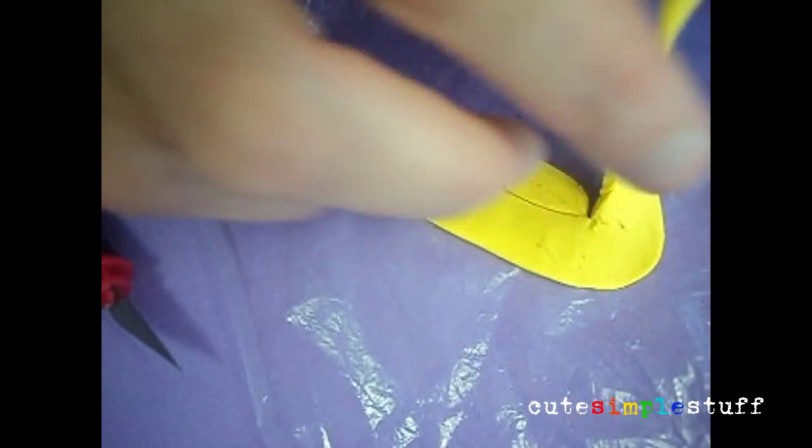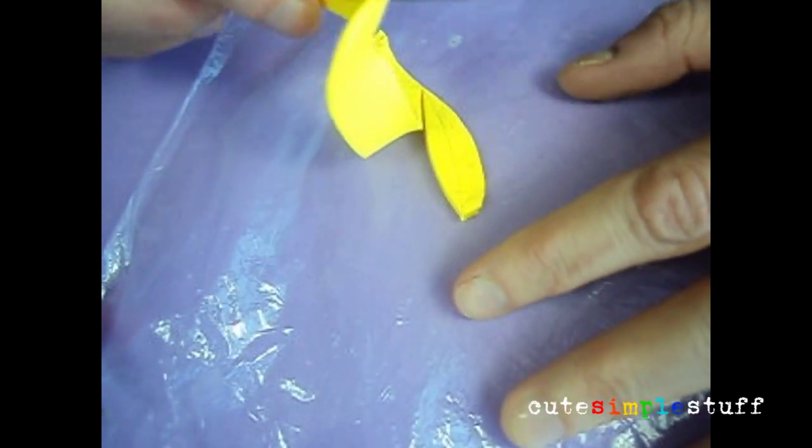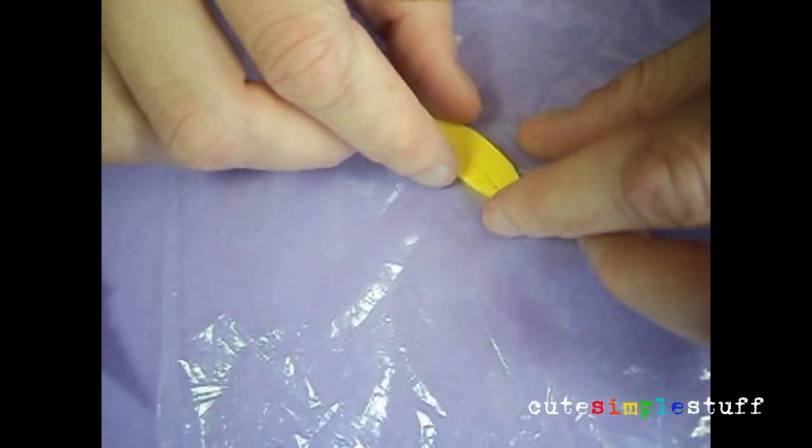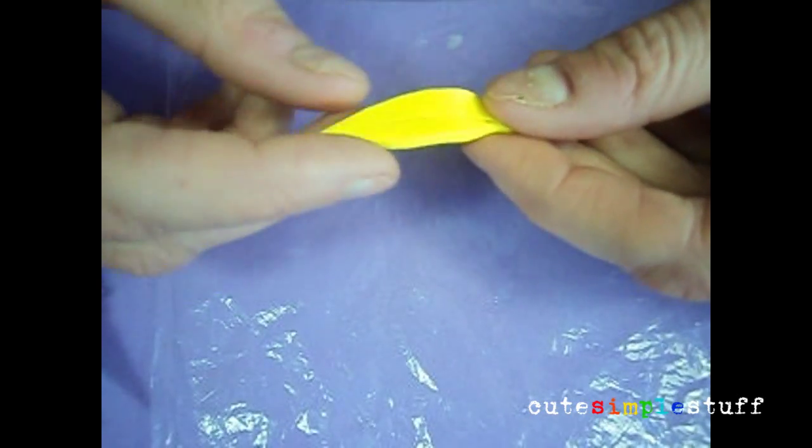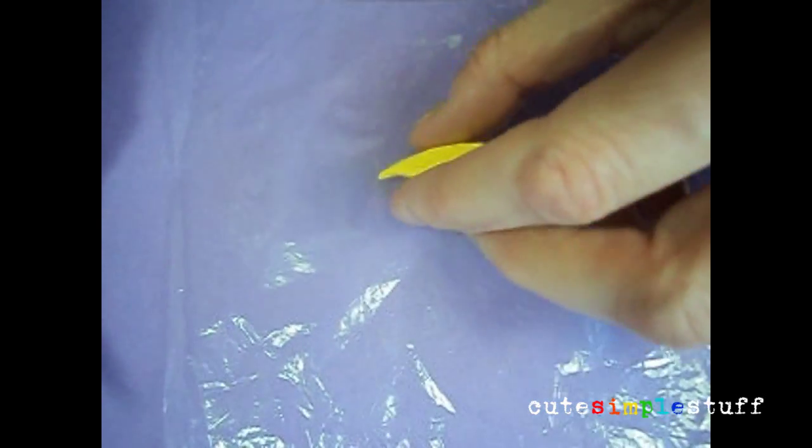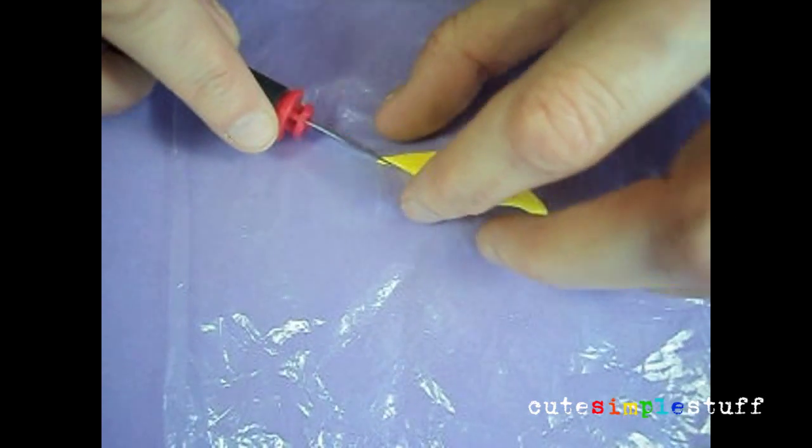Then I started smoothing the edges because I didn't want my clay to look just cut. I wanted it to have smooth surfaces. I did all the arrangements I needed.